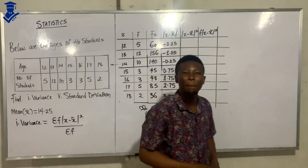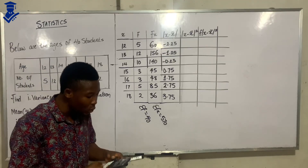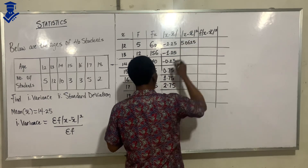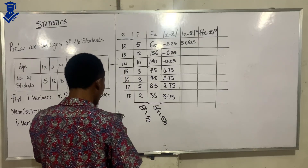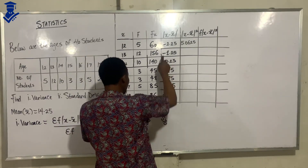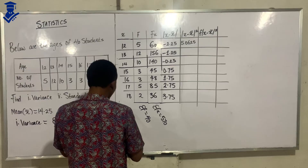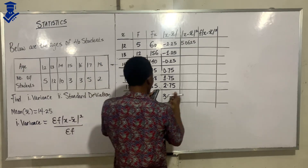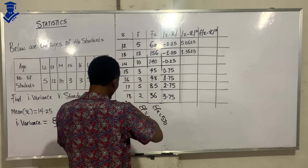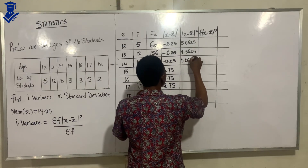Now we have to get x minus x̄ squared — we square each of these values. So 2.25 squared gives 5.0625. Then minus 1.25 squared: since we're multiplying in two places, the minus doesn't matter, giving 1.5625. And 0.25 squared gives 0.0625.